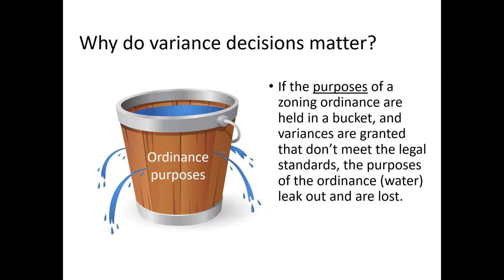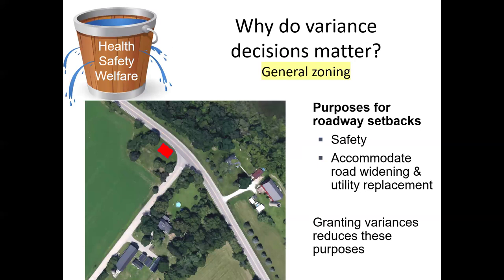Why do variance decisions matter? Think about the purposes of a zoning ordinance as water held in a bucket — public health, safety and welfare. When variances are granted that don't meet the legal standards, the purposes of the ordinance leak out and are lost throughout the community. For example, under general zoning, the purposes of roadway setbacks are safety and to accommodate future road widening and adding or replacing utilities. Granting variances can reduce those purposes.